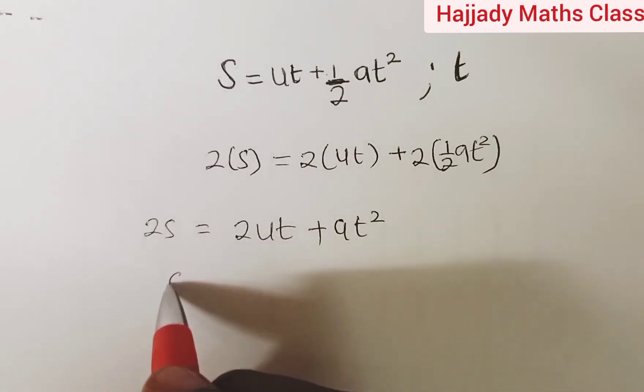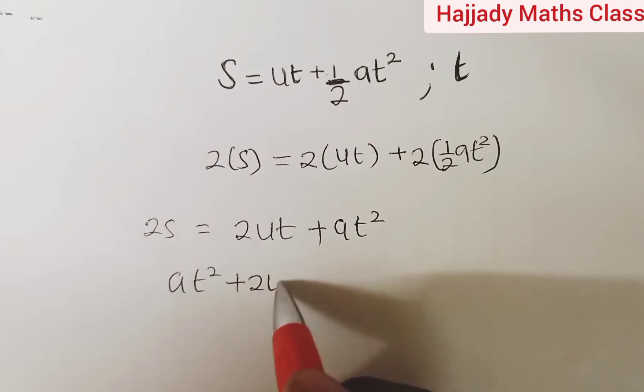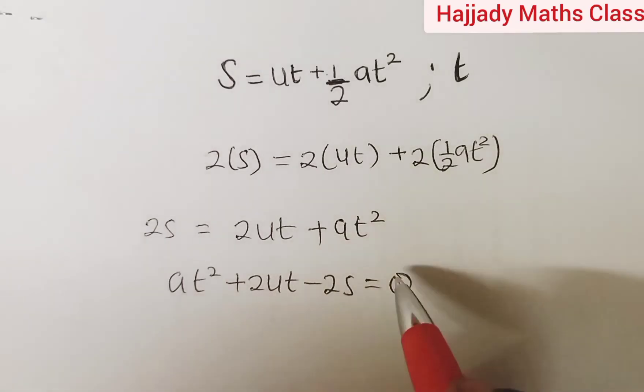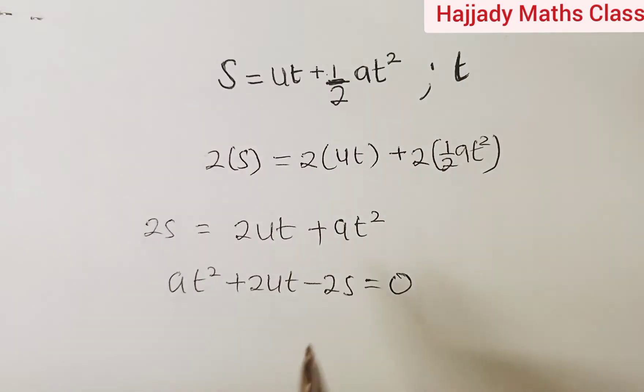So regarding this equation, we are going to have at squared plus 2ut minus 2s equals 0. Now looking at this, I can say that this is a quadratic equation.